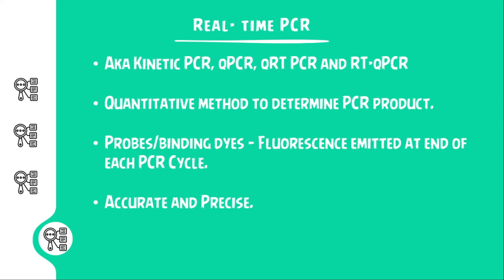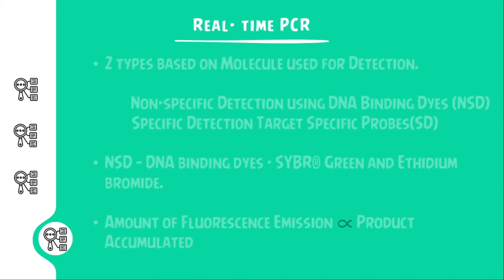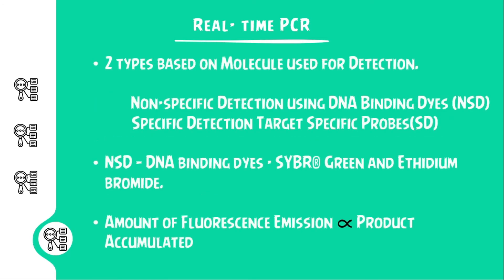This is a very accurate and precise method. There are two types of real-time PCR based on the molecules used for detection: non-specific detection using DNA binding dyes, and specific detection using specific probes. These two types differ with respect to the dye or probe being used. In non-specific detection, the dye randomly attaches to the strand and emits light at the end of each cycle after it is detached from the strand.